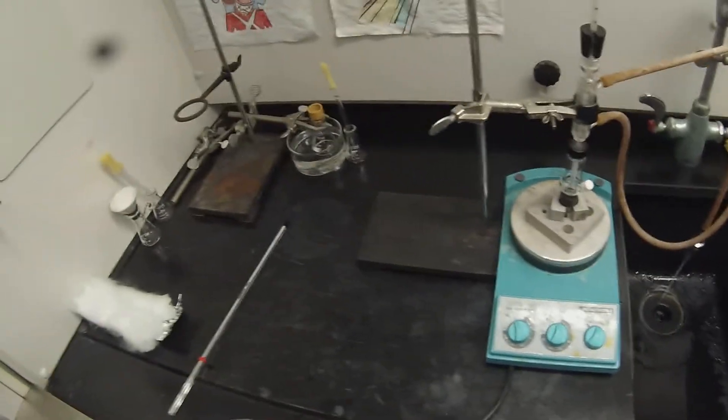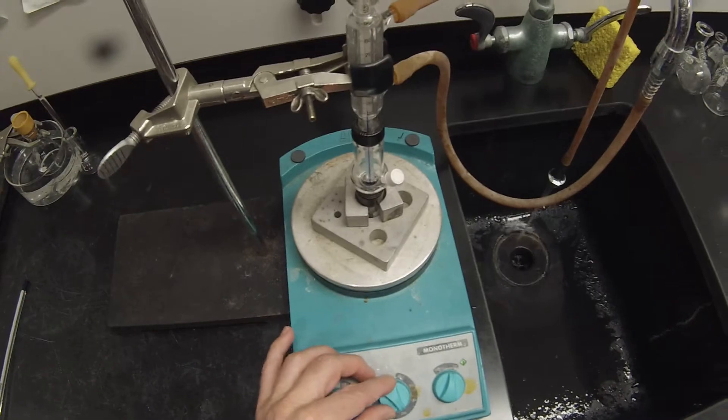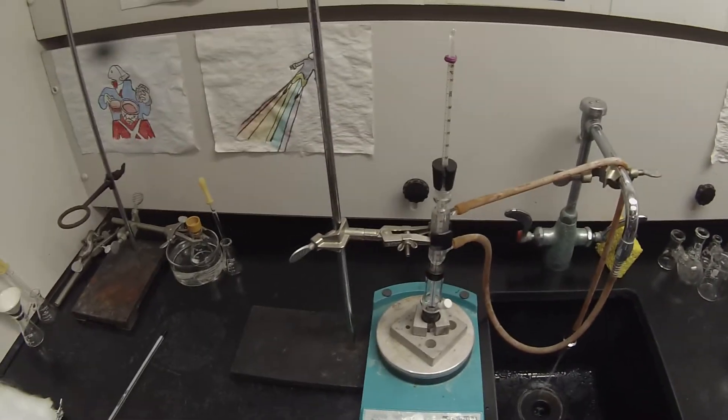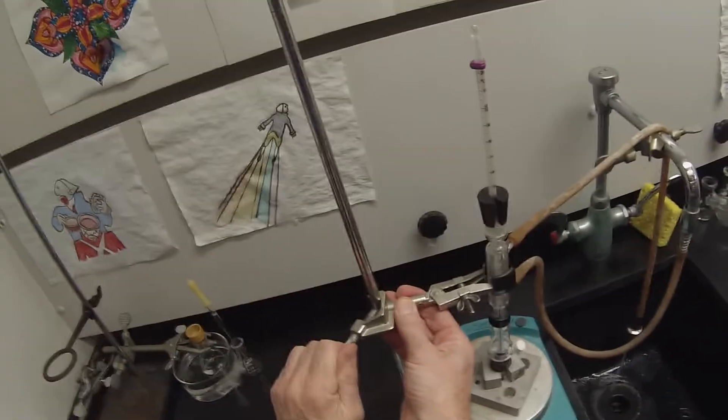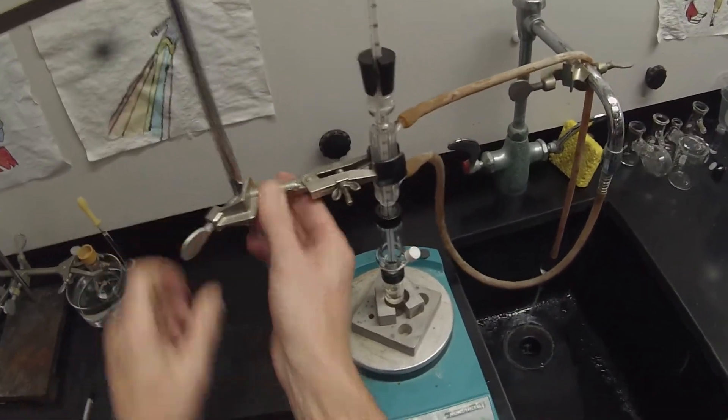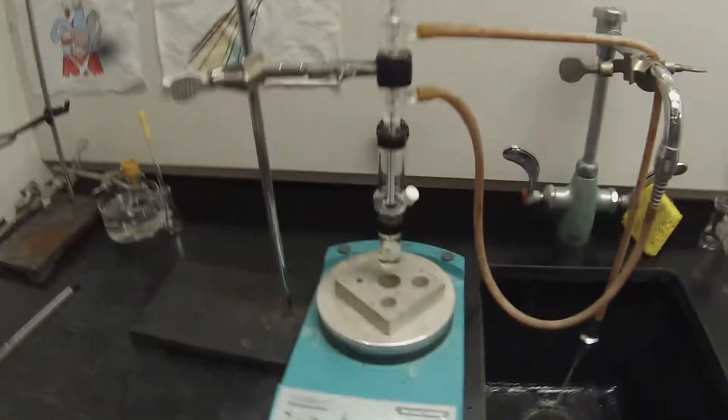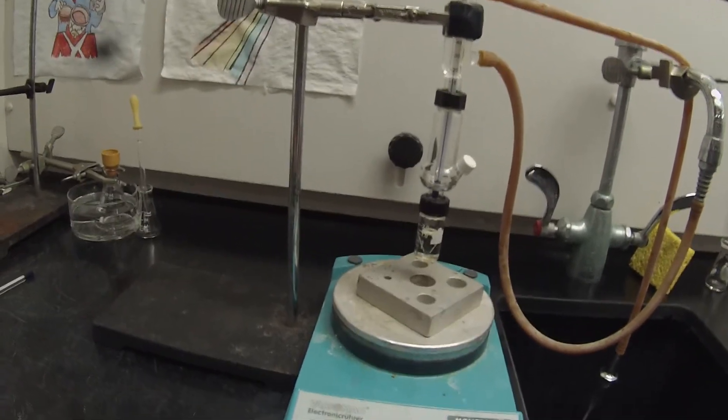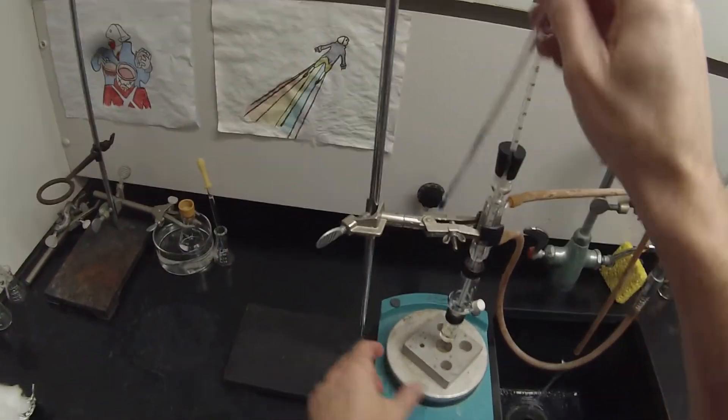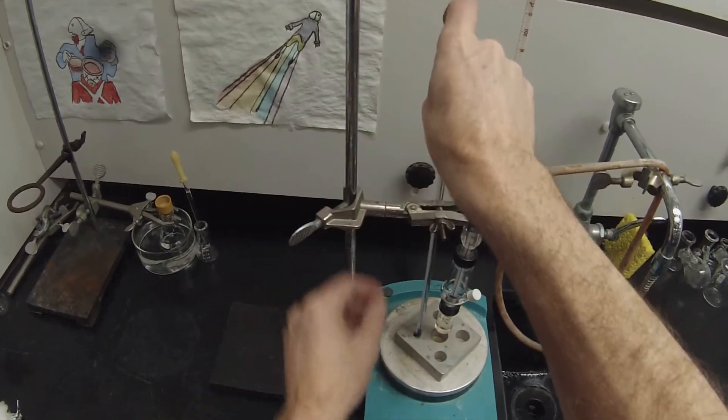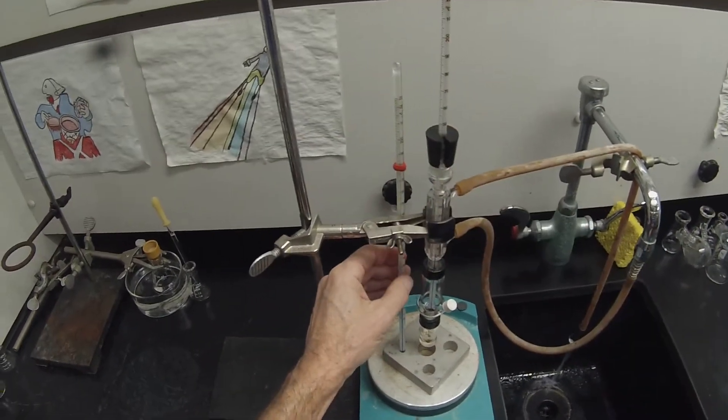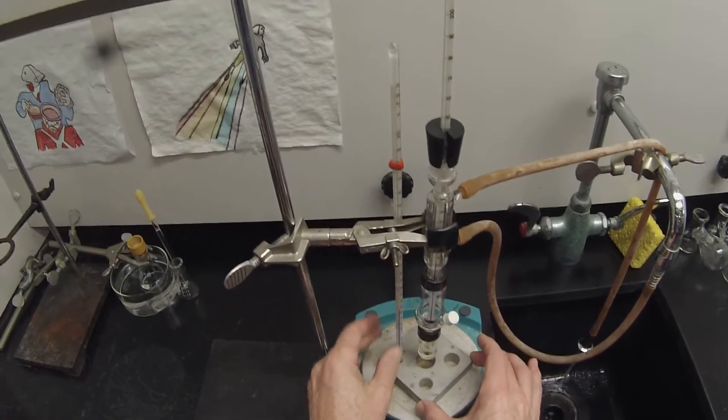Now we're going to turn that on and we want that hot block to be at about 180 degrees, so I'm going to turn this up to halfway between 200 and 250 to try to get that up to temperature fairly quickly. In the meantime I'm just going to scoot that out because we don't really want to heat it prematurely and risk dehydration reactions or other side reactions. We want it to distill pretty quickly once it distills. I'm going to stick a thermometer in that block so it's just behind the clamp so it's safe.